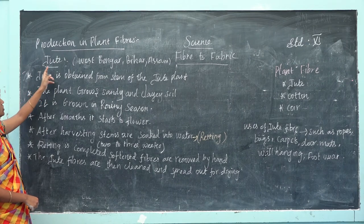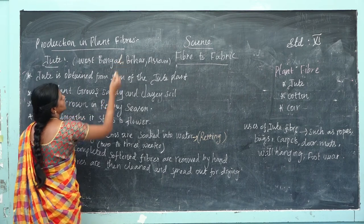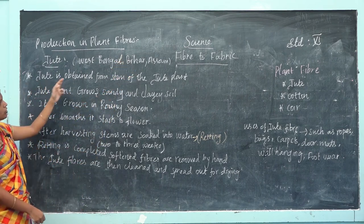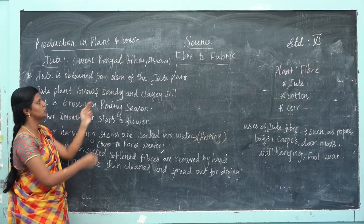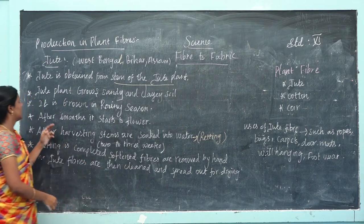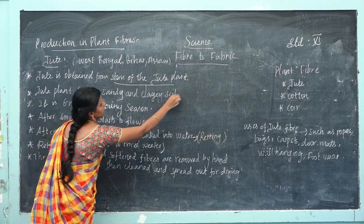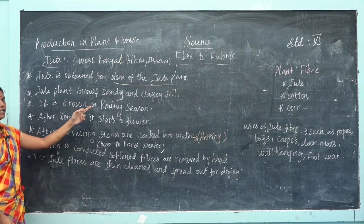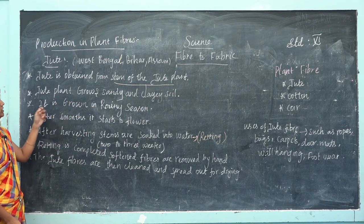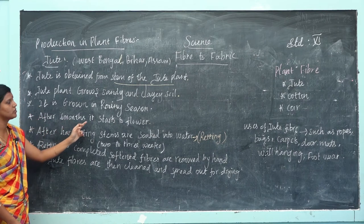Jute in India is majorly produced in West Bengal, Bihar, and Assam. Jute is obtained from the stem of the jute plant. Jute plants grow in sandy and loamy soil. It is grown in the rainy season. After 6 months it starts to flower.